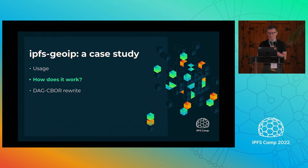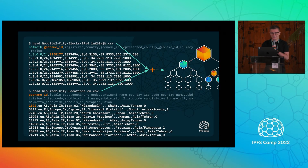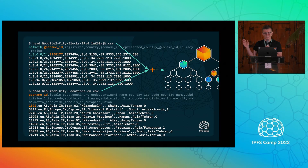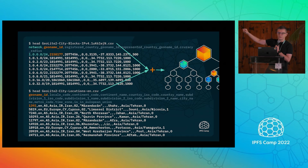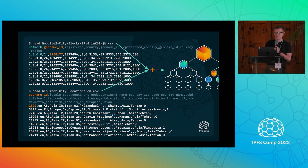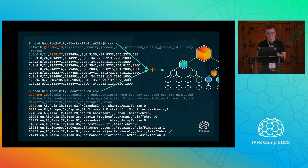So how does it work beyond that function? The GeoIP dataset we use is from GeoLite. It's publicly available. The problem is it's in a comma-separated value format. So what we do, we read all the data. The format is simple: you have a network definition, so it's like a range of IPs and the location for that range. It could be a single IP or it could be an entire network. So we convert this format to a B-tree, and we represent that as an IPFS DAG.